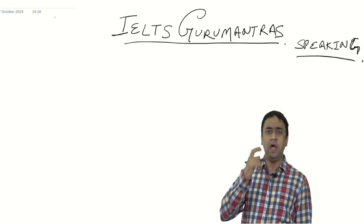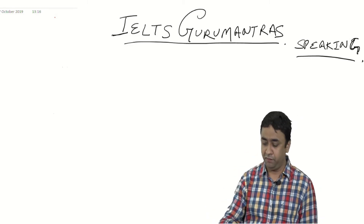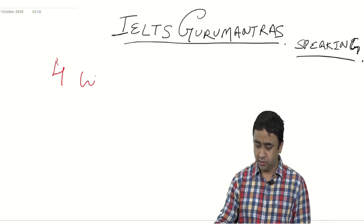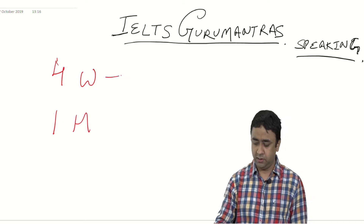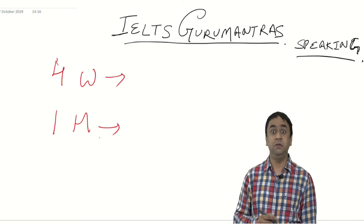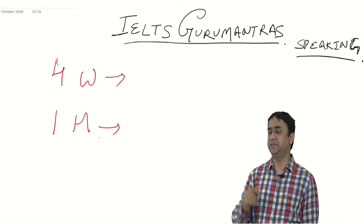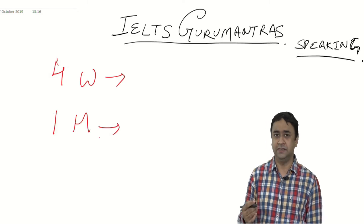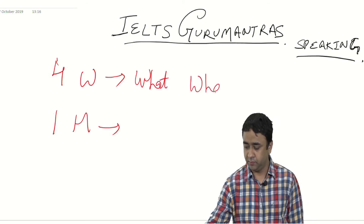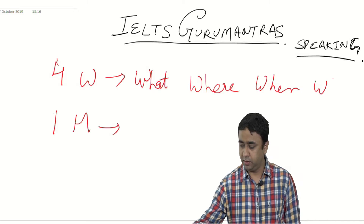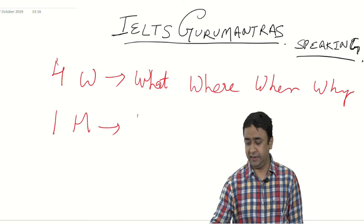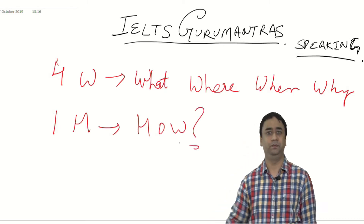So how should you answer this question? I would like to guide you with the help of four W's and one H. Now what does this stand for? It doesn't mean four wives and one husband — sorry! It means: What, Where, When, Why, and at last, How. Keep these questions in mind when you answer.